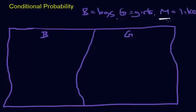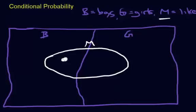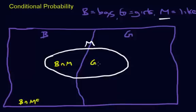The math group — some of them are girls, some of them are boys, so group M can overlap or cross over. So this is M for the people who like math. The people in one region are boys who do not like math; the next region has boys who do like math; then girls who like math; and finally girls who do not like math. In set notation: B and M-complement, B and M, G and M, and G and M-complement.